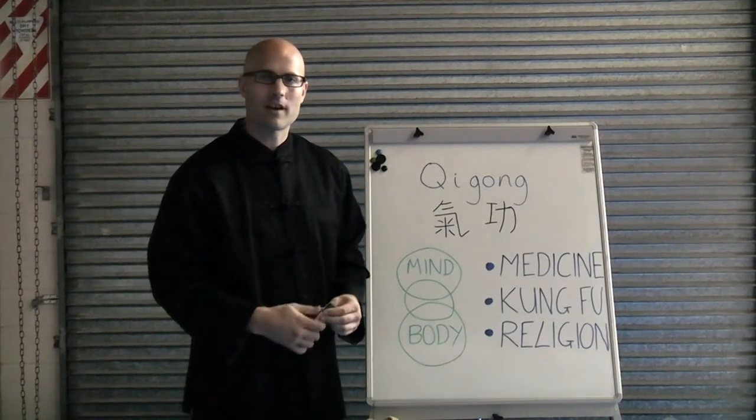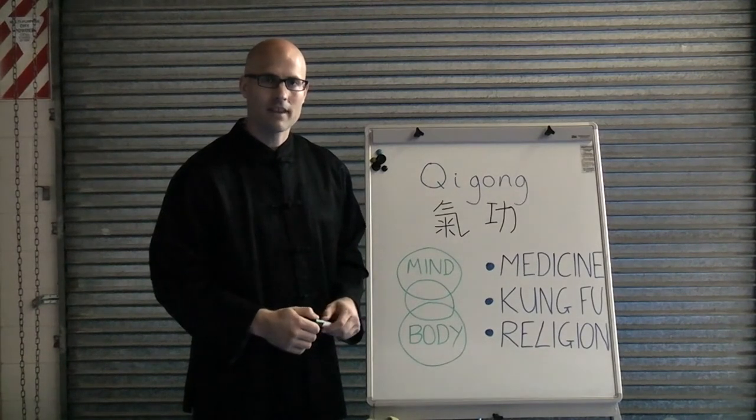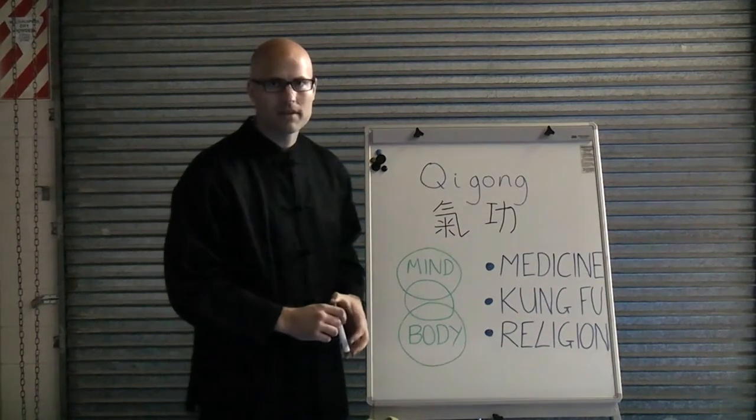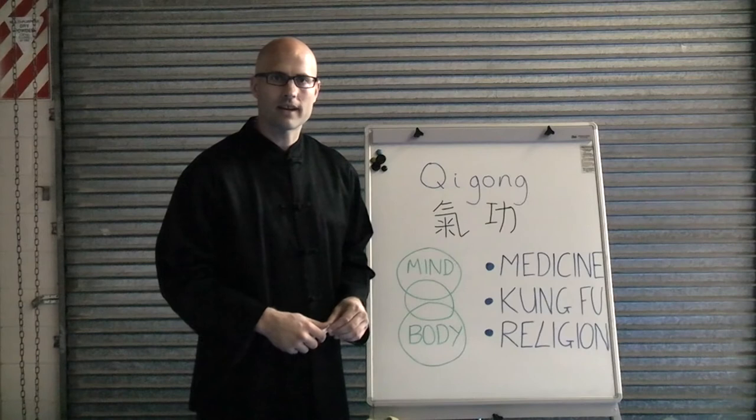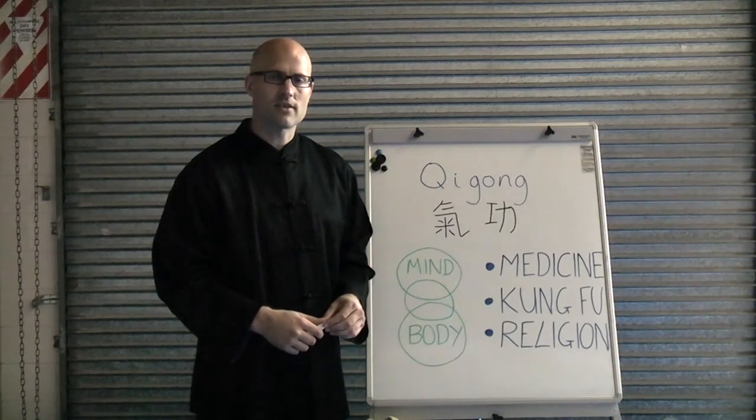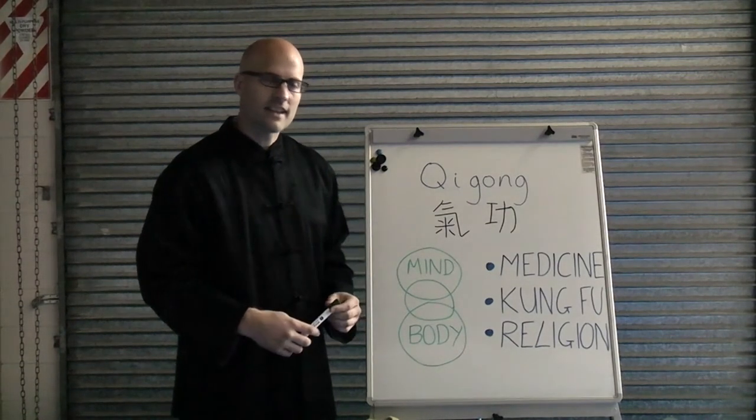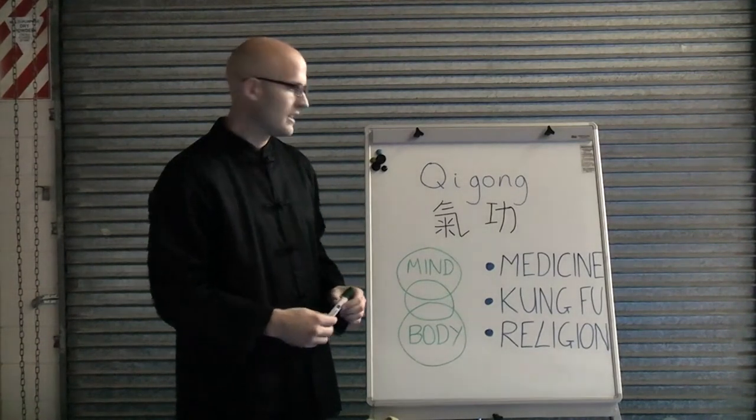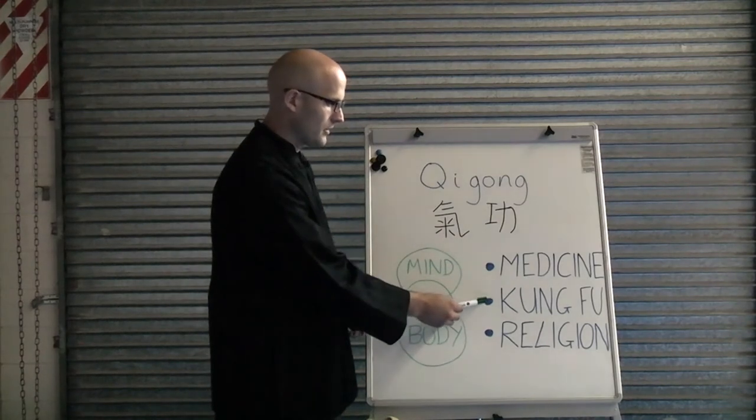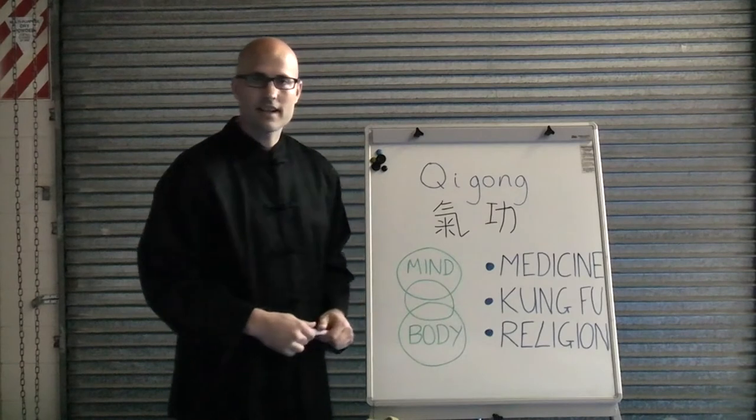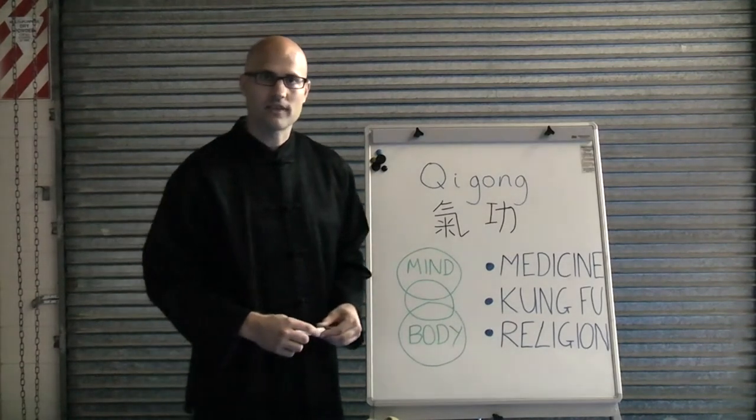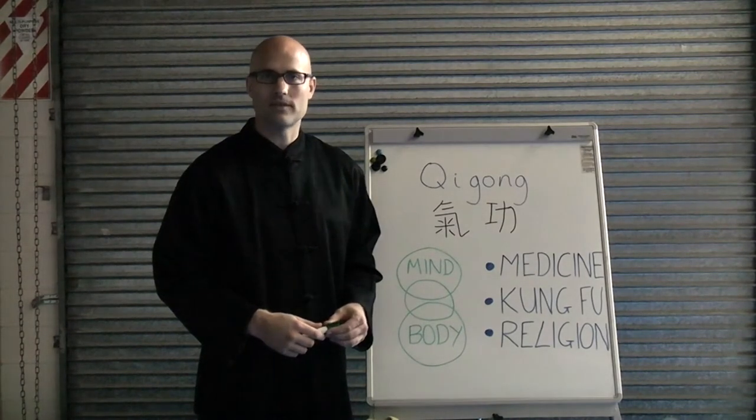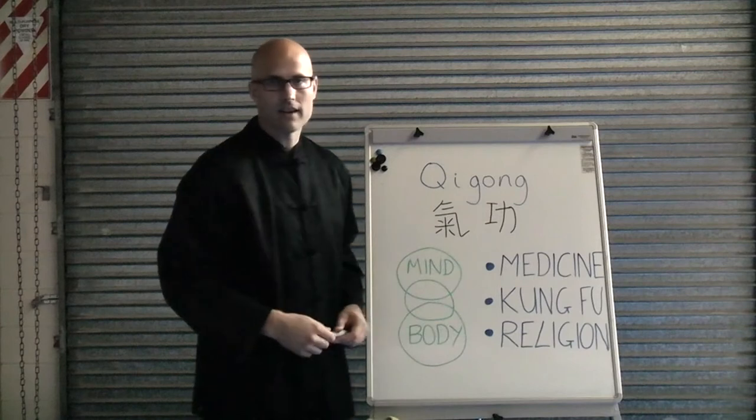The Chinese, by working with this concept of energy and union between mind and body, were able to achieve extraordinary results. They applied these results and what they learned to three main areas: medicine, kung fu, and religion. That's by no means exhaustive - it is possible to apply qigong principles to any facet or pursuit in life - but these were the three main areas.